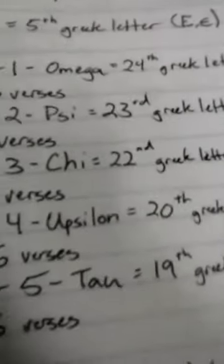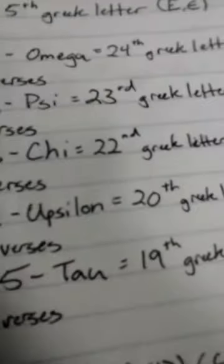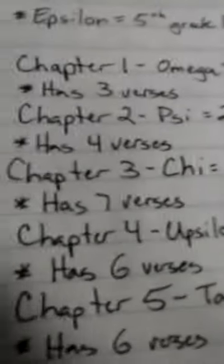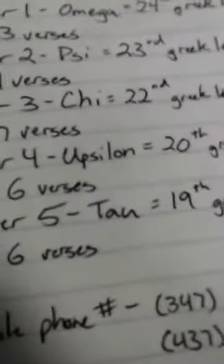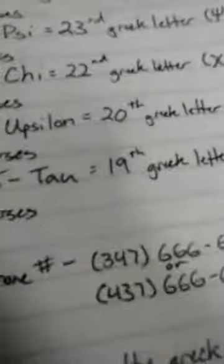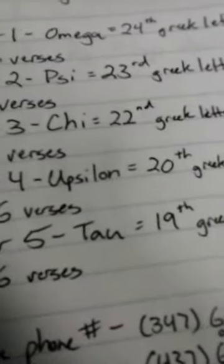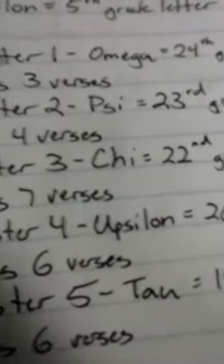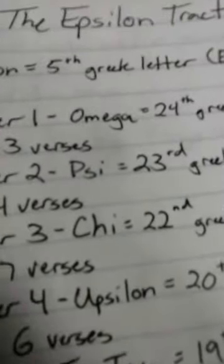The 21st letter, 21, is missing. You go from chapter 3, it's called Chi, to chapter 4, Upsilon. The number 21 is missing. So it goes the 19th Tau, the 20th Upsilon, skips 21st letter, goes to 22 Chi, 23 Psi, 24 Omega. Now, I'm not too sure what the relevance of that is. I'm sure it is. All is number.